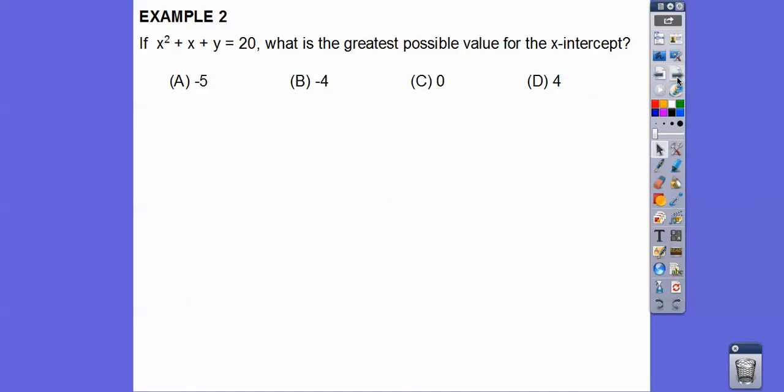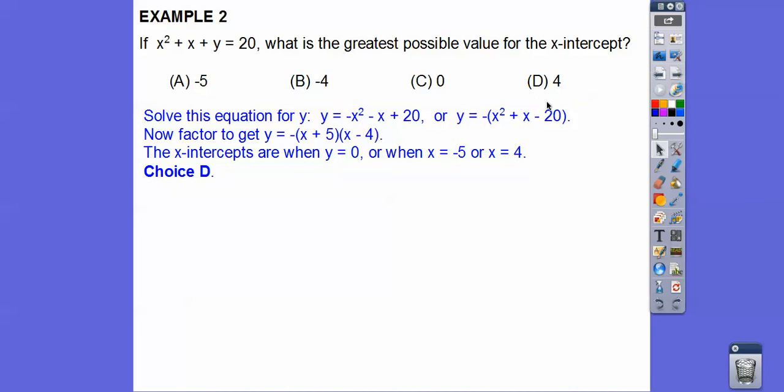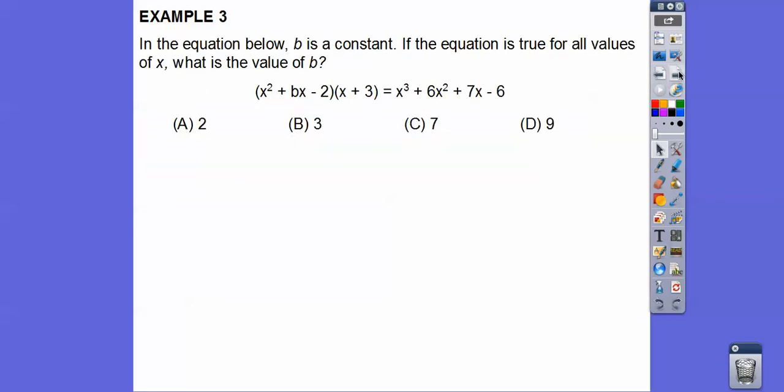All right. So find the, what is the greatest possible value for the x intercept? So solve for y, you guys. So the x intercept is when y equals 0. So if we solve for y, we get this equation. And in factor, that factors to x plus 4, x minus, I'm sorry, x plus 5, x minus 4. Don't forget the negative you factored out. So the x intercepts are negative 5 and positive 4. So which one's the greatest one? 4 is the greatest one. Choice D. Notice negative 5 is a choice right there. That's another trick. They're trying to trick you.